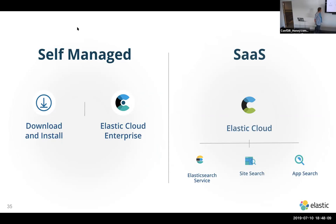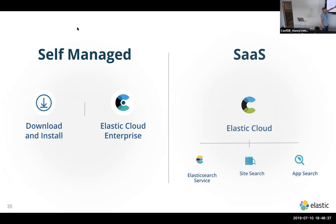Deployment models: you can download and install on Linux, Windows, or Mac. We have our SaaS called Elastic Cloud, which runs on AWS. We have a private SaaS option so you can run it inside your own VPC. And we have a commercial product called Elastic Cloud Enterprise — for use cases where you can't or don't want to use the public cloud, but want the same user experience as SaaS. You can install it anywhere and create clusters with a click.